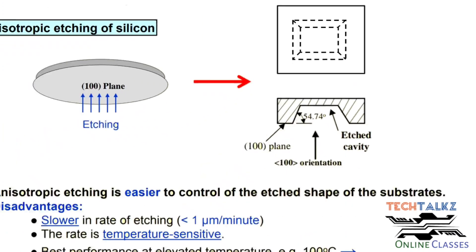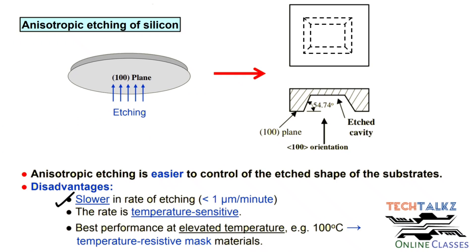A disadvantage of anisotropic etching is that it is a slow process compared with isotropic etching — the etching rate is generally less than 1 micrometer per minute. It is also a temperature-sensitive process, requiring elevated temperatures, for example around 100 degrees Celsius.